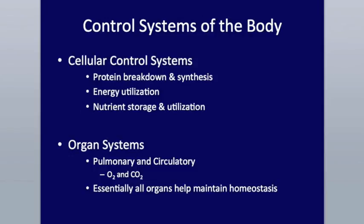Looking at the control systems of the body, we have cellular and organ control systems. At the cellular level, cells can regulate protein breakdown and synthesis occurring within the cells, especially within muscle cells. The energy utilization — how much ATP is being used — goes into nutrient storage and utilization: how much glucose or carbohydrates are coming into the cell, how much is going out, how much fats are coming in. Within the muscle and liver where glycogen is stored, how much is being broken down into glucose for energy utilization.